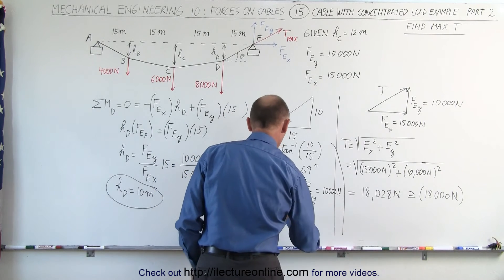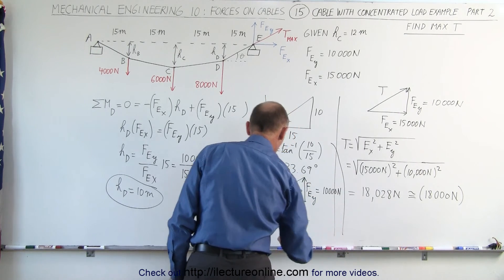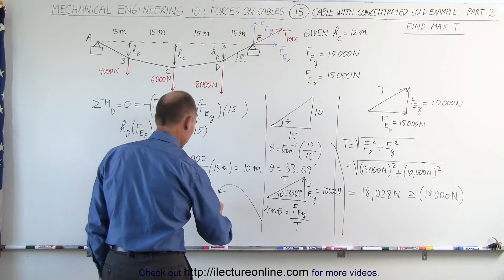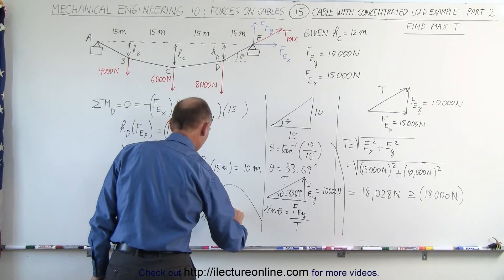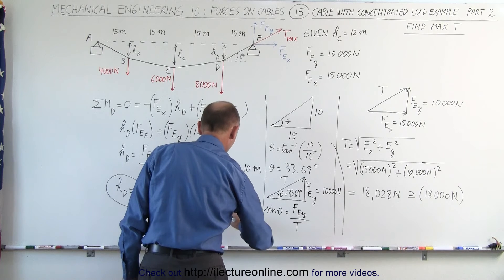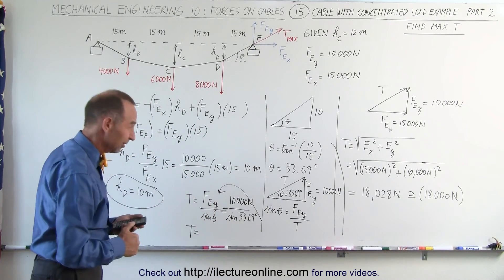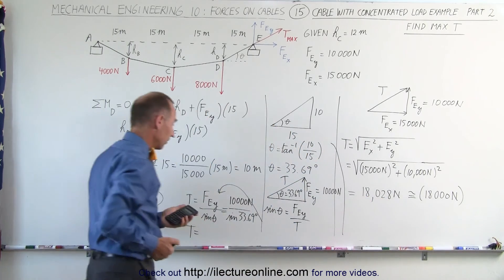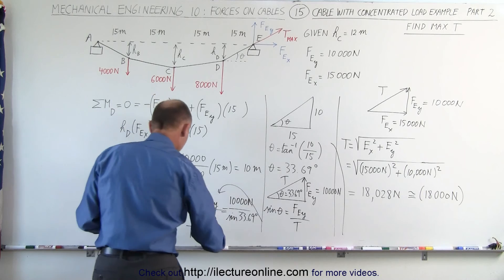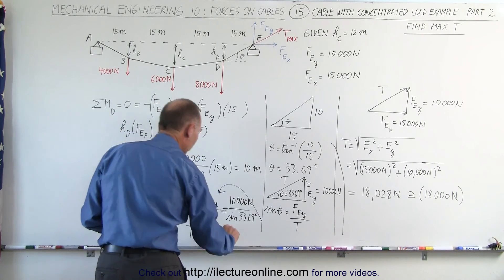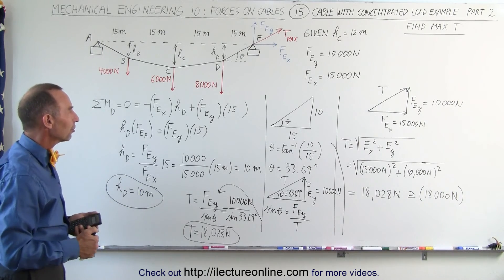What we want here is, we want the sine of theta is equal to the opposite side, the force E sub Y, divided by T, which means that T is equal to the force in the Y direction at E, divided by the sine of theta, which is equal to 10,000 newtons divided by the sine of 33.69 degrees, and finally, T equals, and hopefully we get the same answer as we got over there, right? So let's try. We have 10,000 divided by 33.69, take the sine of that, equals, and sure enough, 18,028 newtons, of course, which is about 18,000 newtons, and you can see there's various methods in which you can find the following parameters of the various parameters.